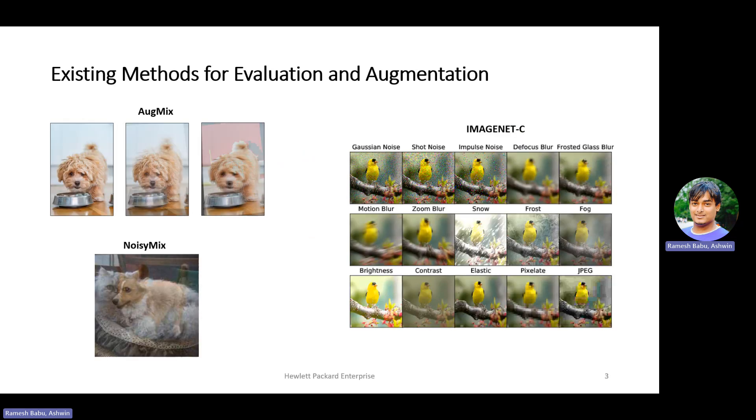For robustness evaluation, ImageNet-C and CIFAR-10C are the most popular existing benchmarks. We will be evaluating our proposed method against this approach. Furthermore, some of the methods like AugMix and NoisyMix are popular methods for data augmentation for training. As our approach is used for both evaluation of robustness and training, we will evaluate against both of these approaches.